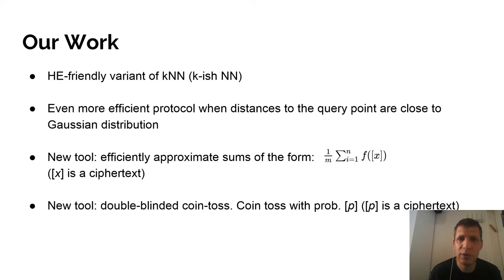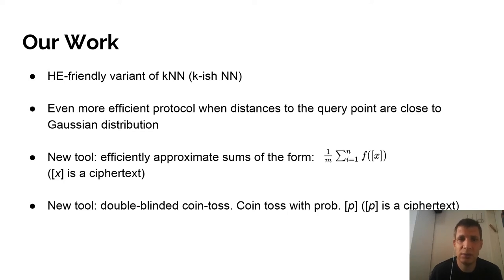I want to give a quick summary of our work. I'm going to talk about a variation of KNN which we call K-ish nearest neighbors. This variation is more HE-friendly, meaning that it is more efficient to be implemented with homomorphic encryption schemes. We're going to show an even more efficient protocol if the distances to the query point are close to Gaussian distribution — the closer the distribution is to Gaussian, the better accuracy our classifier has.